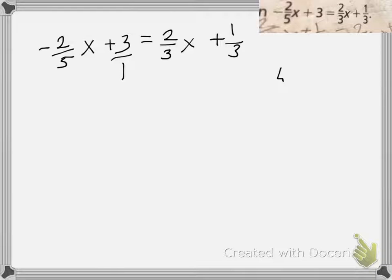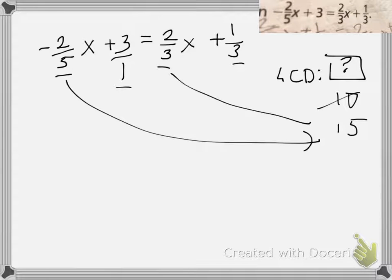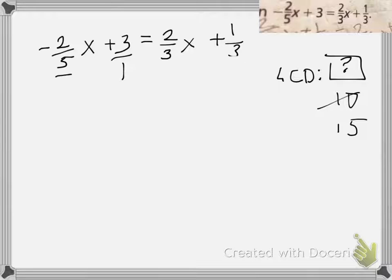Now we have to think about the LCD, the lowest common denominator. The lowest common denominator is a number that all of these go into. Let's say it could be ten, because five goes into ten twice. However, three does not go into ten, so it cannot be ten. Let's try fifteen. Five goes into fifteen, three goes into fifteen, and one goes into fifteen. The LCD is 15.